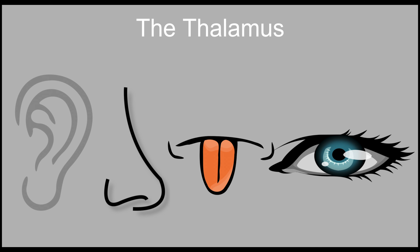The thalamus makes sense of what we hear, taste, and see. The thalamus processes those experiences and determines which part of the brain the information should be sent.